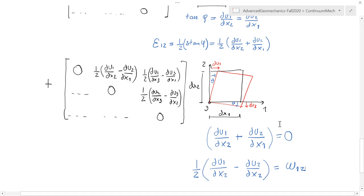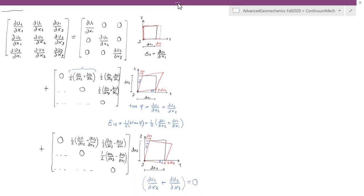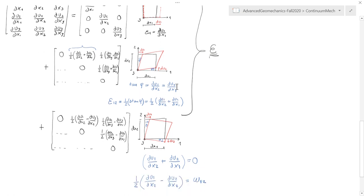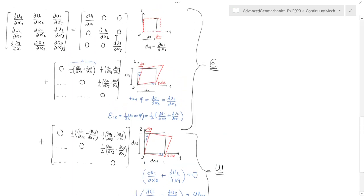The same is going to apply for the other directions, but at the end of the day what I'm left with is that this Jacobian decomposes into two matrices: one which composes the strain tensor, quantifying linear strains and shear strains, and another matrix which is the rotation matrix — which we do not use in mechanics, at least in small strains. So at the end of the day, what I want to capture is just the first part.